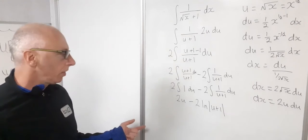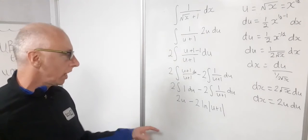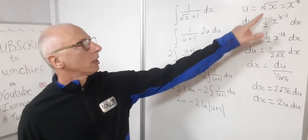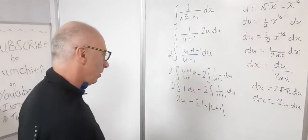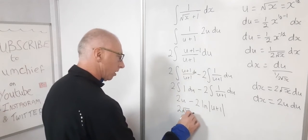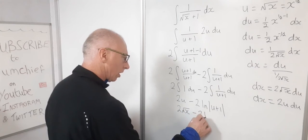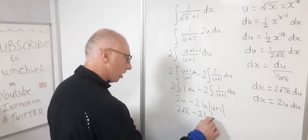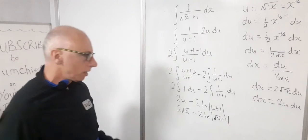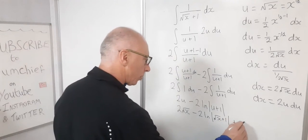We're not quite ready for the plus c just yet, because we need to go back into our x world. So u is the square root of x. So now we've got two square root of x minus two times the natural log of square root of x plus one. And then we're ready to put in our plus c.